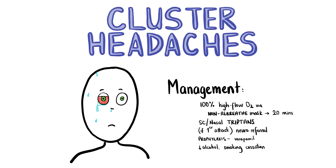A cluster headache refers to a severe pulsating unilateral periorbital pain associated with autonomic symptoms, for example lacrimation, ipsilateral eyelid oedema, ptosis, rhinorrhoea, conjunctival injection and sweating. The pain tends to be short-lived and is relieved by physical activity. This is why patients during an episode appear restless and may be seen pacing. People who suffer with cluster headaches can go for long periods of time, that is more than a month, without having any cluster headache and then suddenly have a cluster of episodes — this is referred to as episodic. People with chronic cluster headaches do not go a month without having an episode.